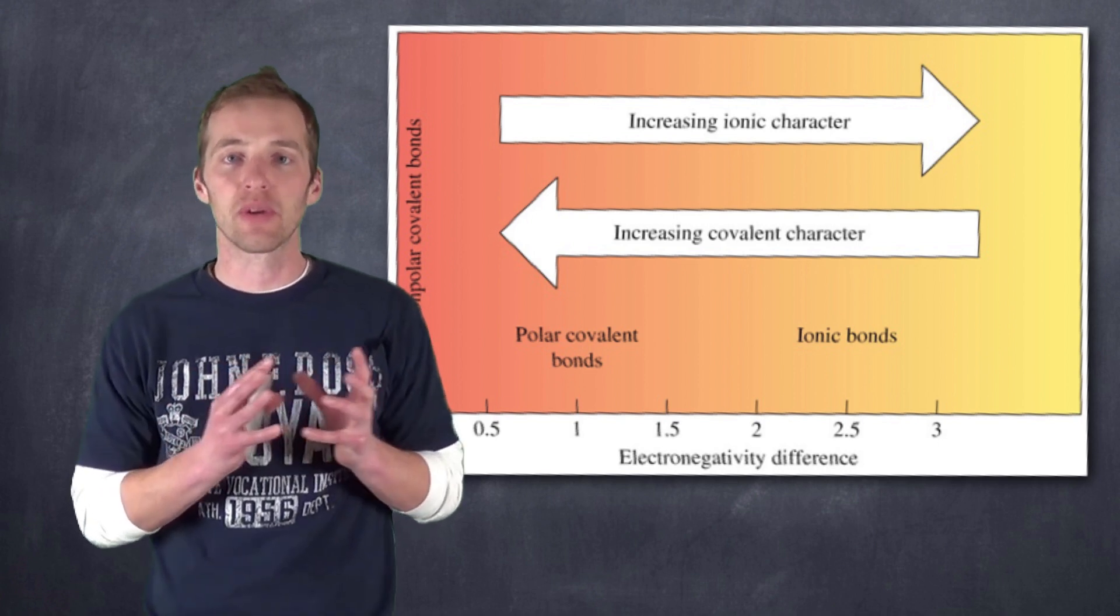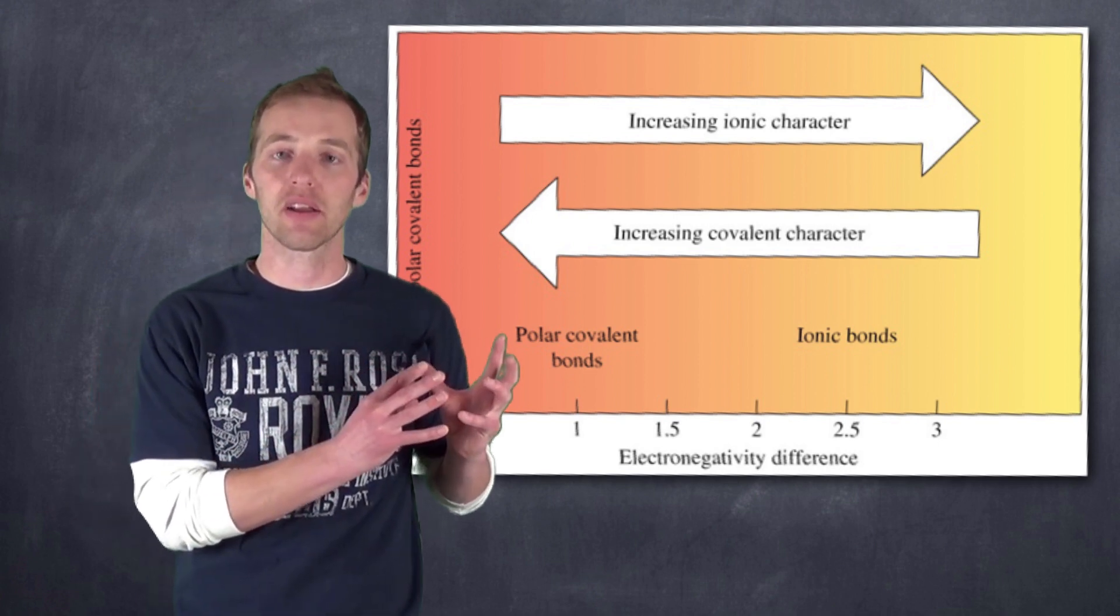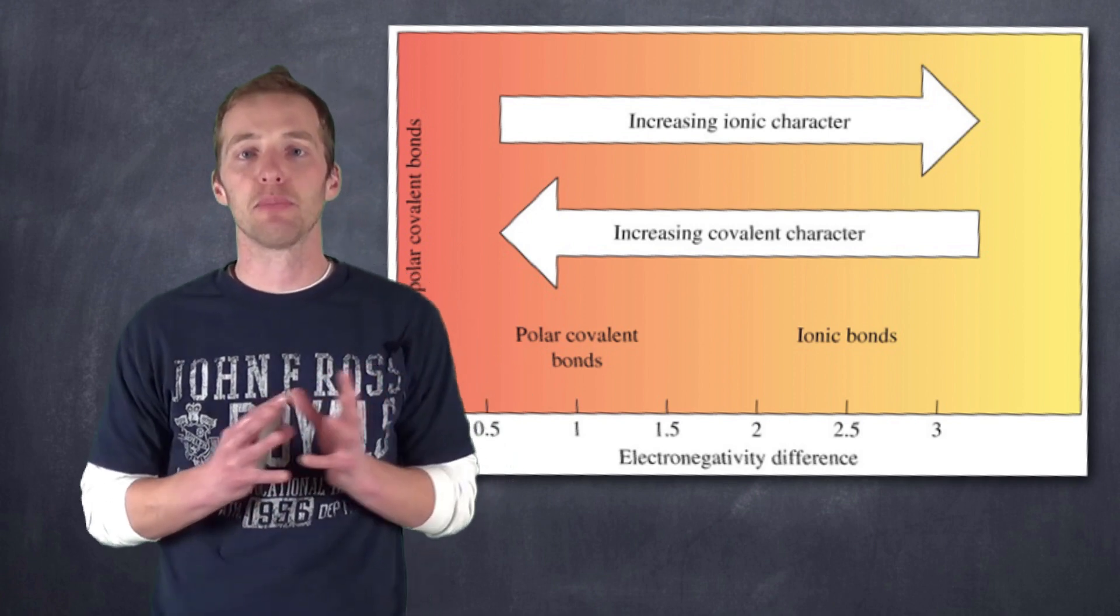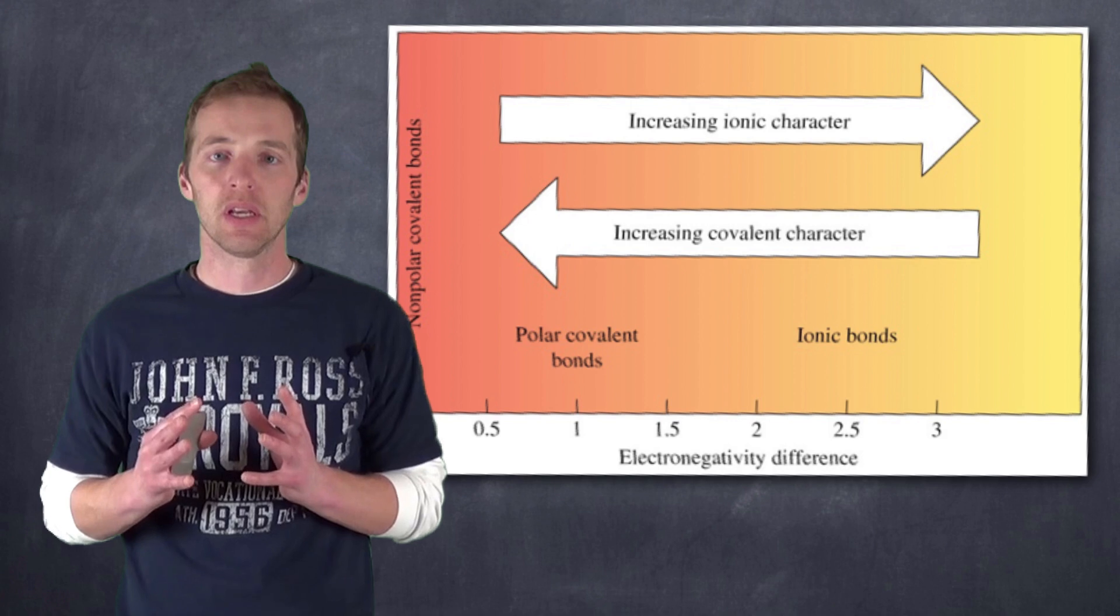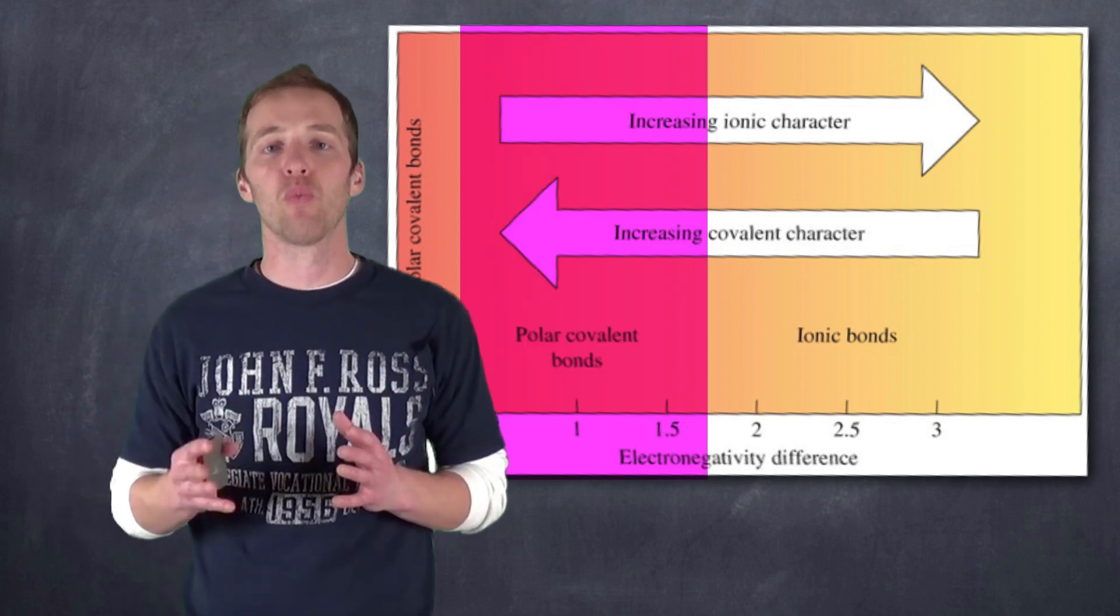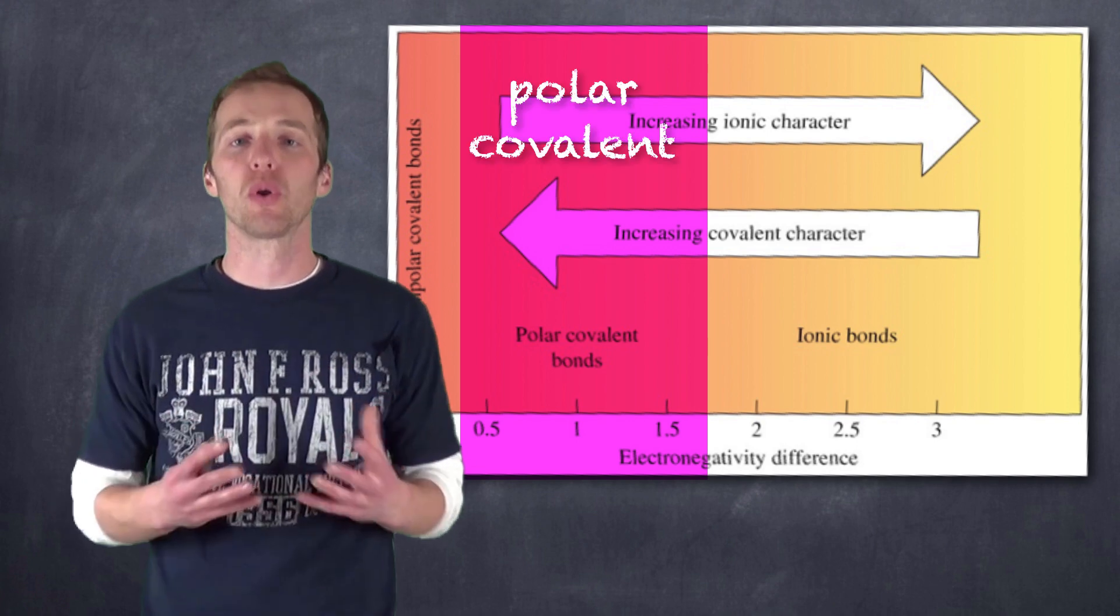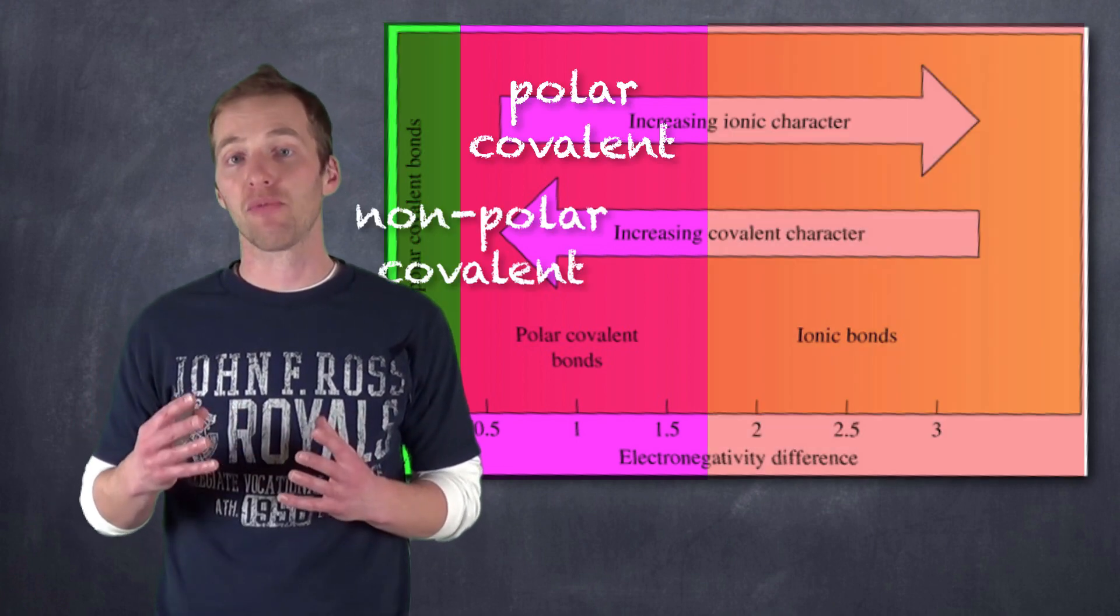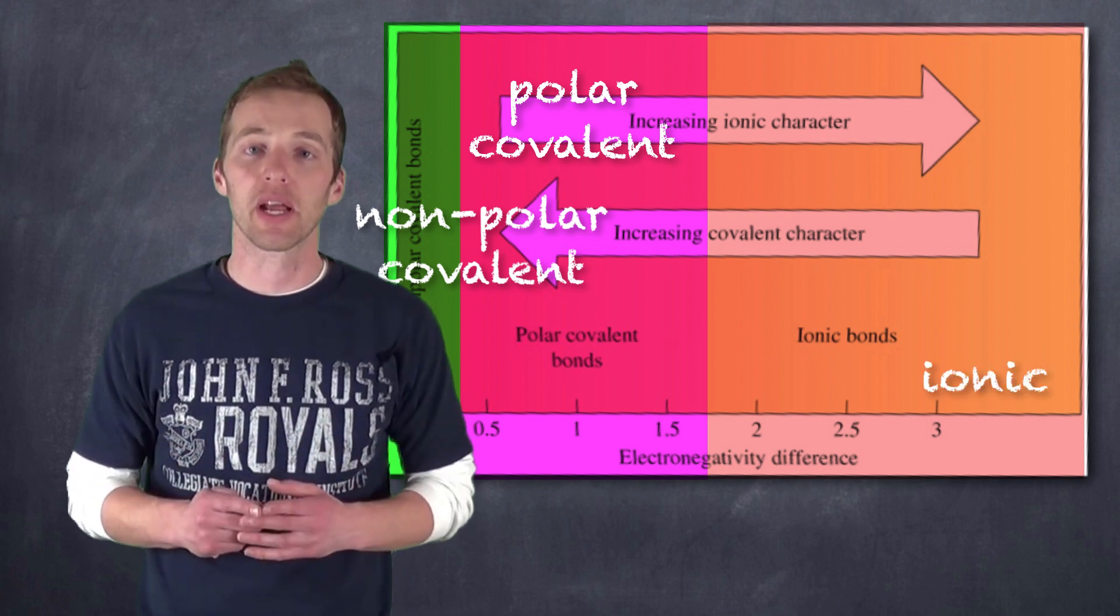So the higher the electronegativity difference, the more ionic the character, and the lower the electronegativity difference, the more covalent the character. Now generally, the rule is, if something is between 0.4 and 1.7, we refer to it as polar covalent. If it's below 0.4, we say it's non-polar covalent, and if it's above 1.7, we say that it's ionic.